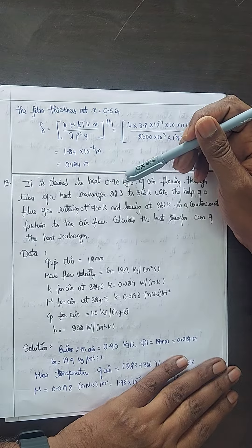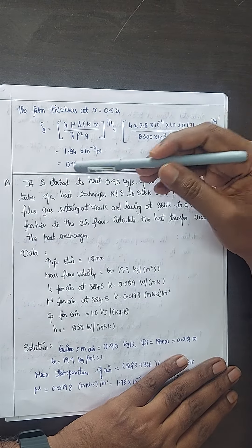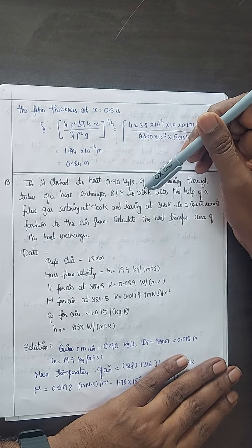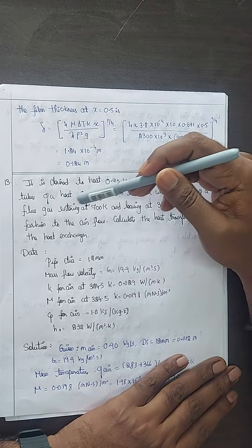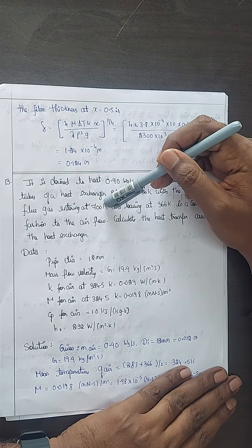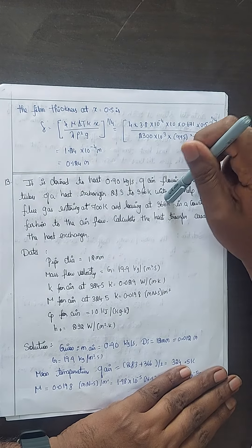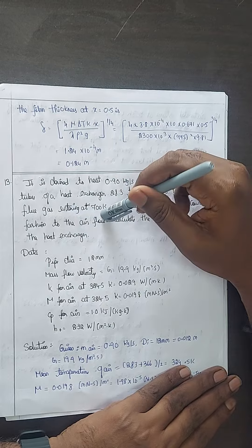It is desired to heat 0.9 kg per second of air flowing through tubes of a heat exchanger from 283 to 366 Kelvin with the help of a flue gas entering at 700 Kelvin and leaving at 366 Kelvin in a counter-current fashion to the airflow.